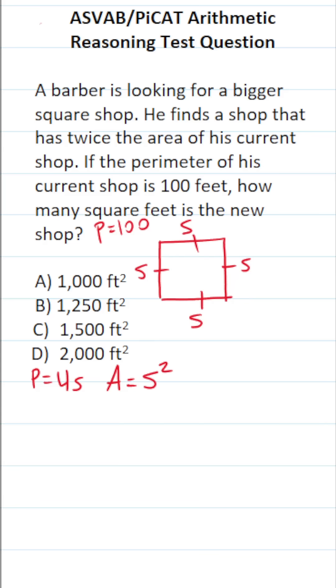So clearly, in order to find the area of his current shop, we're going to have to find the side length of his current shop, and we're going to use the perimeter formula to do that. We're told the perimeter of his current shop is 100 feet, so we'll go ahead and plug in 100 for P.